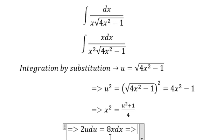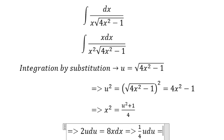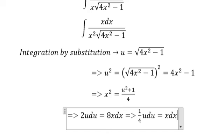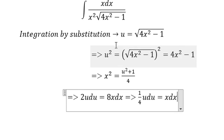We divide both sides by 8 because we have only xdx in the numerator. Now we will replace everything inside this integral.